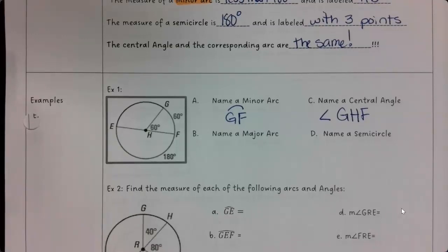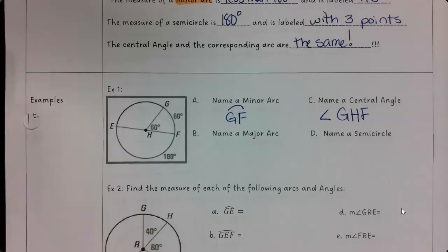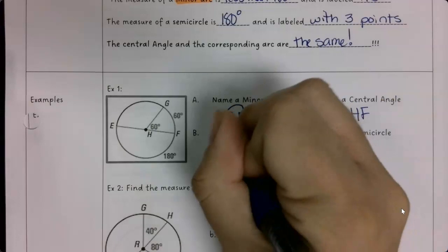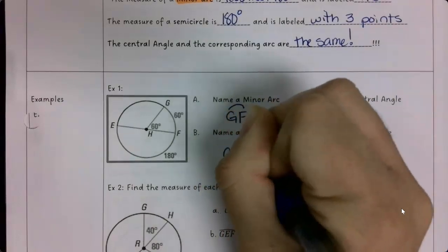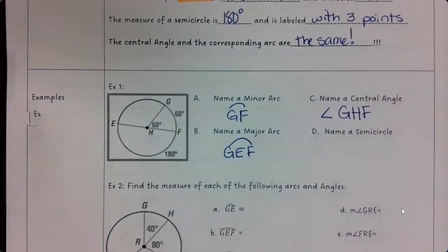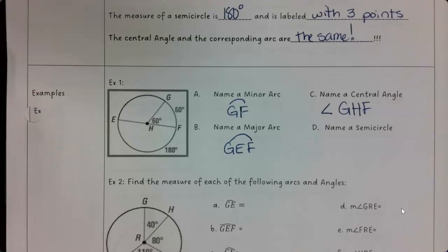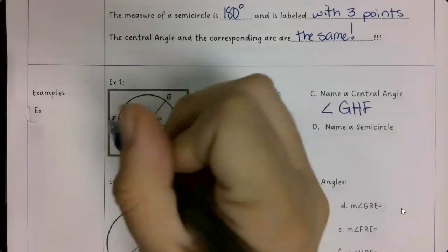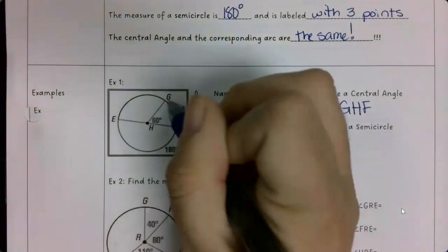So a major arc has three letters. G-E-F. And then a semicircle is halfway across the circle with three letters. So if I start here and I end at F, I go E-G-F.